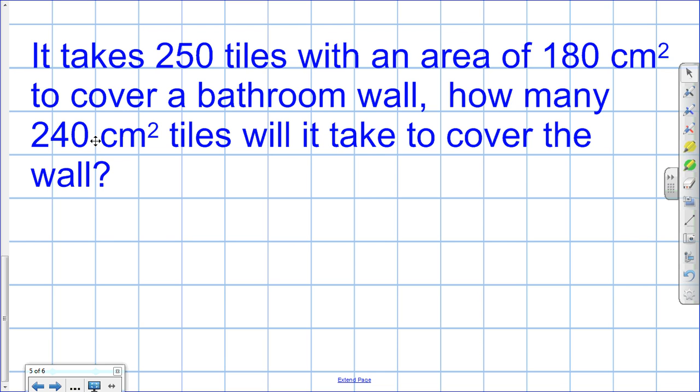The bigger the area, the fewer, the smaller number of tiles. Or the smaller the area, the greater, the bigger number of tiles. So this is indirect proportion.